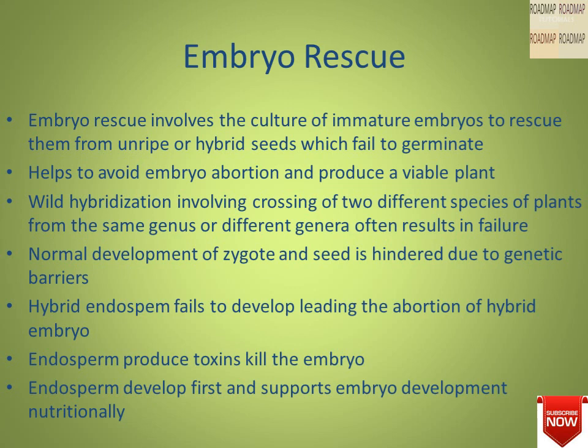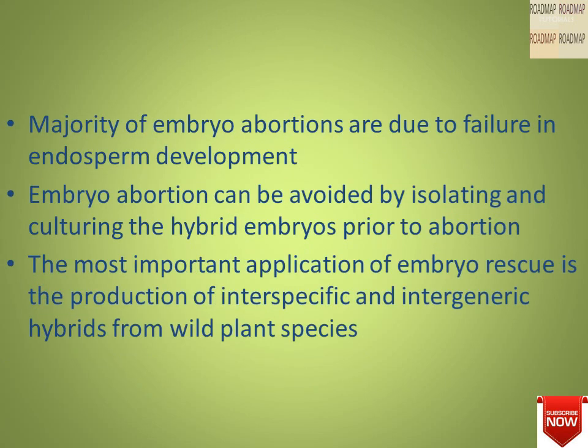The hybrid endosperm fails to develop, leading to abortion of the hybrid embryo. The endosperm produces toxins and ultimately kills the embryos. Endosperm develops first and then supports the embryo development nutritionally. The majority of embryo abortions are due to failure in endosperm development. Embryo abortion can be avoided by isolating and culturing the hybrid embryos prior to abortion. The most important application of embryo rescue is the production of interspecific and intergeneric hybrids from wild plant species.